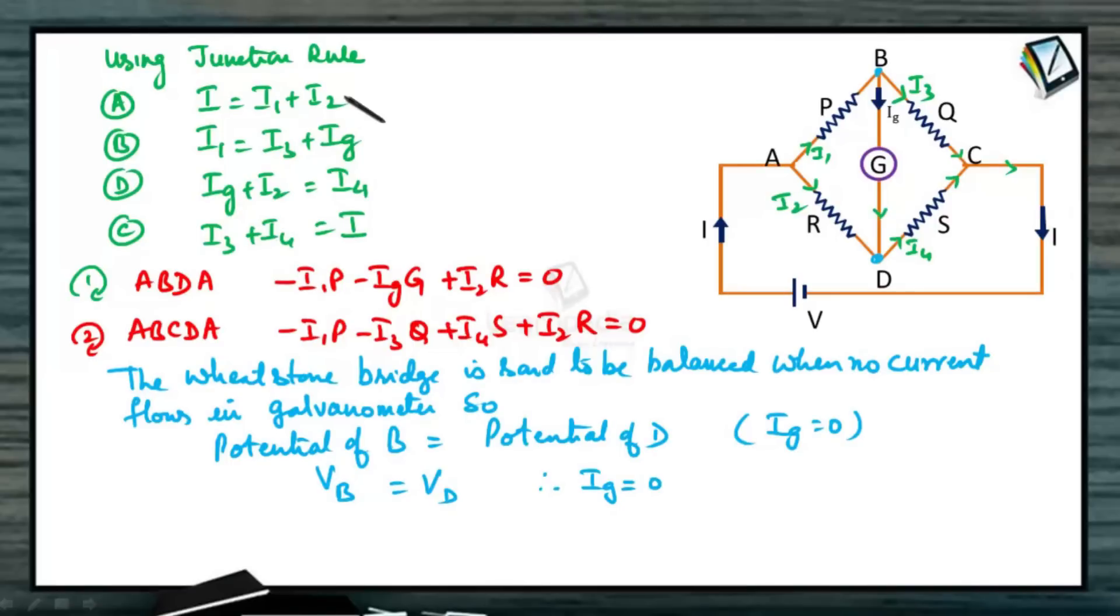Substituting IG equals 0 in this junction rule formulas, we get I equals I1 plus I2. We are going to get I1 equals I3 because IG is 0, and this equation we get I2 equals I4. I1 equals I3, I2 equals I4. Since IG is equal to 0, that means the same current flows through arm AB and BC, and same current flows through arm AD and DC.